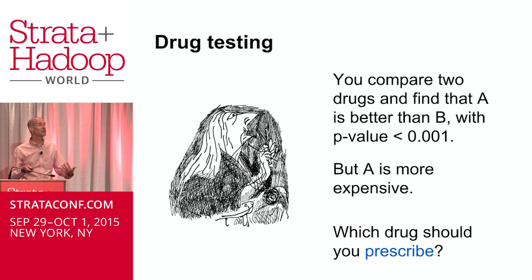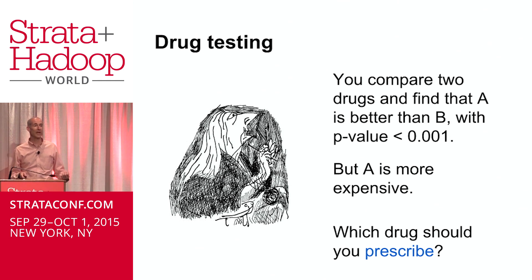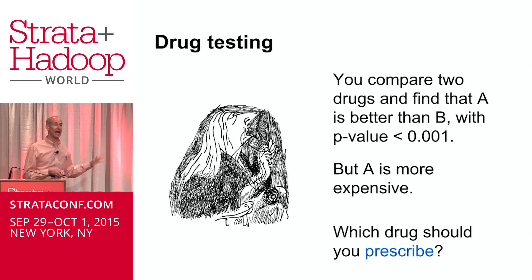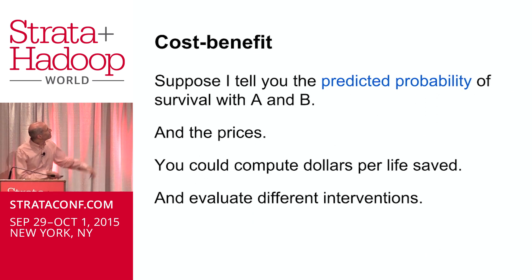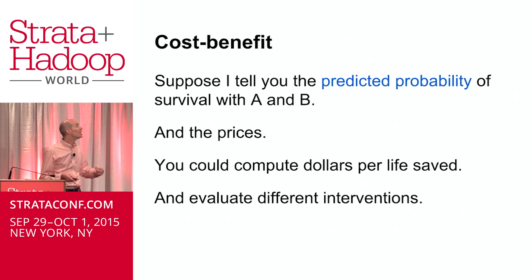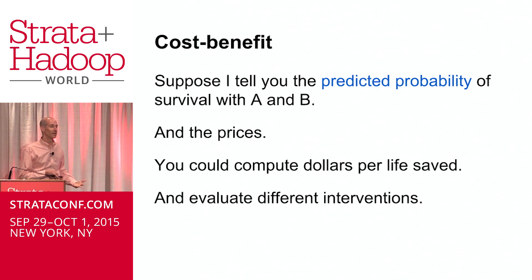A second example is comparing two drugs. You've got a new treatment, you run a drug A versus drug B trial, and you find a difference with a very small p-value. But maybe the new drug A is more expensive. As a doctor, the question you care about is which drug should I prescribe? Frequentist stats provides very little guidance for that question. If you have a posterior distribution on the difference between A and B, along with information about prices and side effects, you can do analysis like dollars per life saved and evaluate different interventions in a sensible way.